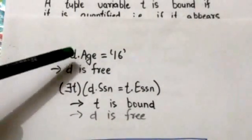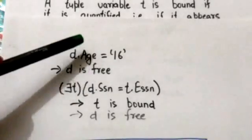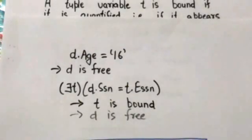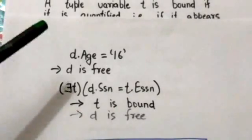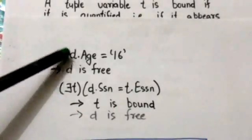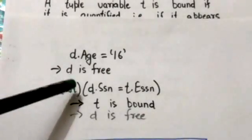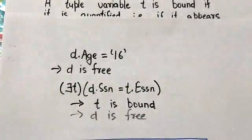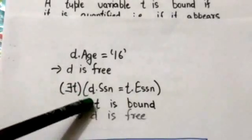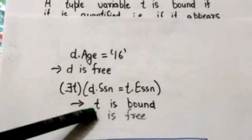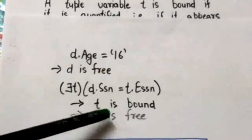In this formula, t.h equals 16 — tuple variable d is free. In this formula, tuple variable t is bound and tuple variable d is free.